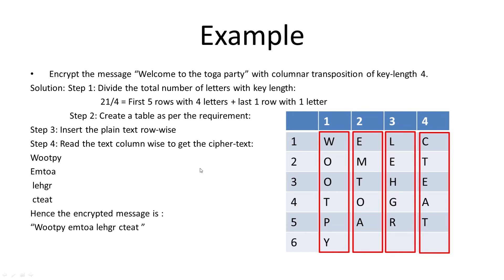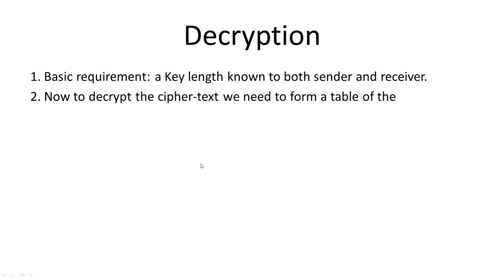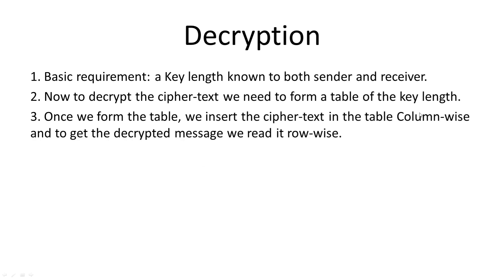Now for the decryption part: you again require the key length, which should be known to both sender and receiver. To decrypt the ciphertext, we again form a table, but in reverse — we insert the ciphertext column-wise and read the deciphered message row-wise.